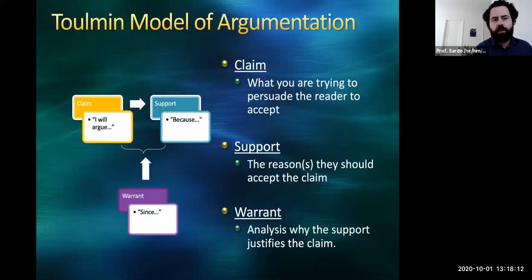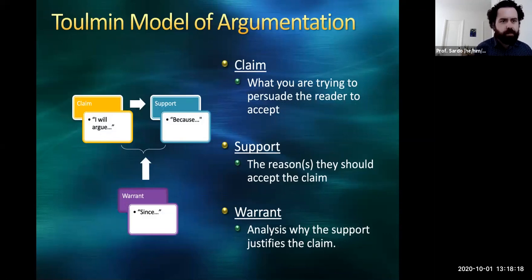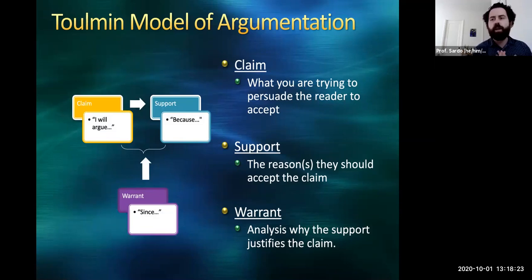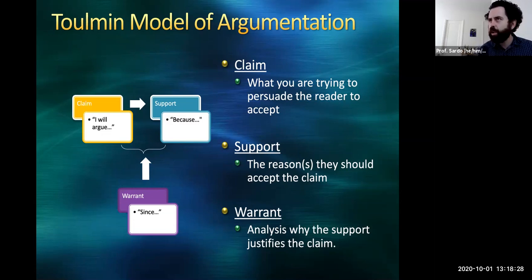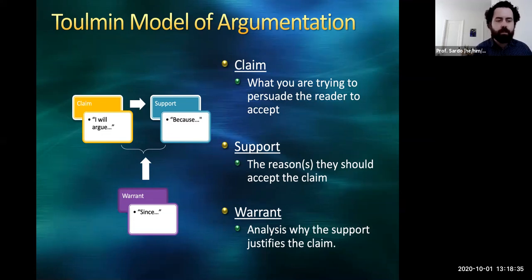The philosopher Stephen Toulmin breaks down the logical structure of an argument into three parts. First, the claim — this is what you're trying to persuade the reader to accept. What is the main idea you're trying to convince me of? Second, the support — what are the reasons that justify the claim and give me reasons to accept it? This is the 'because' part of a thesis statement.